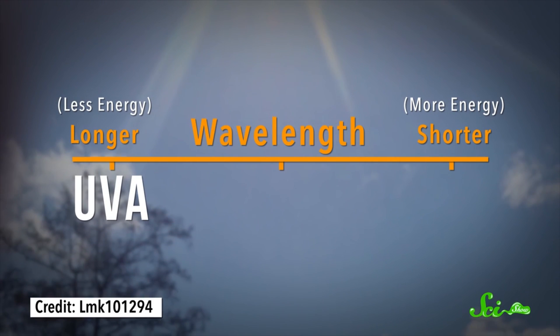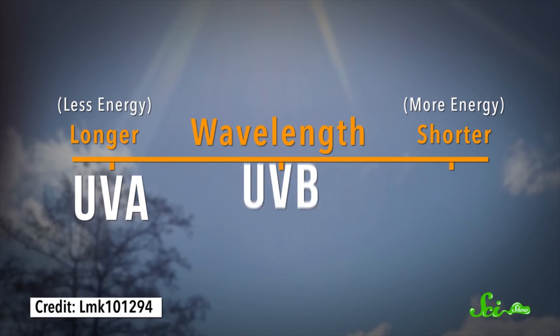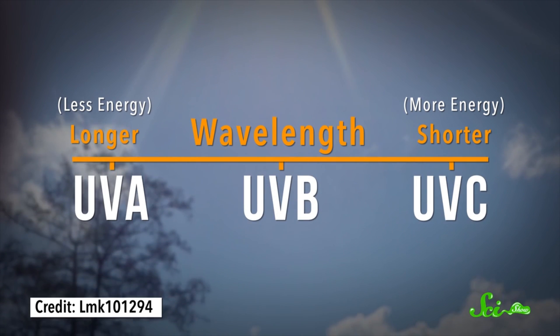We divide UV radiation into three types based on wavelength. UVA, which has a longer wavelength and packs the least energy, UVB in the middle, and UVC with a shorter wavelength and the most energy. But we don't really need to worry about UVC because it's absorbed by the atmosphere.